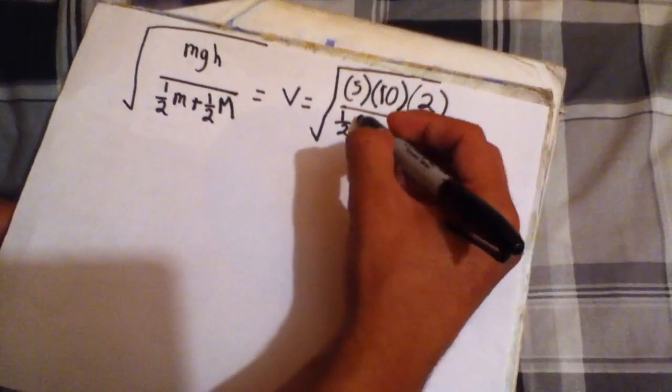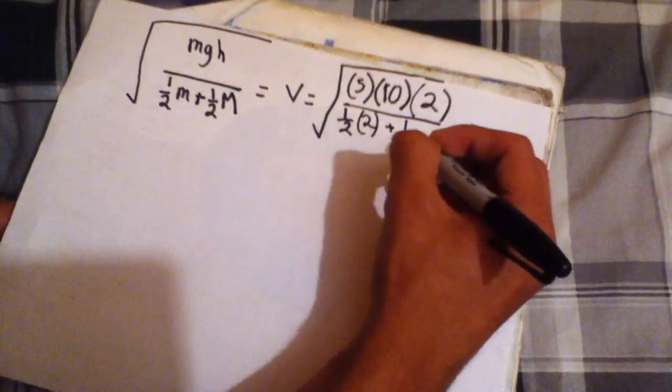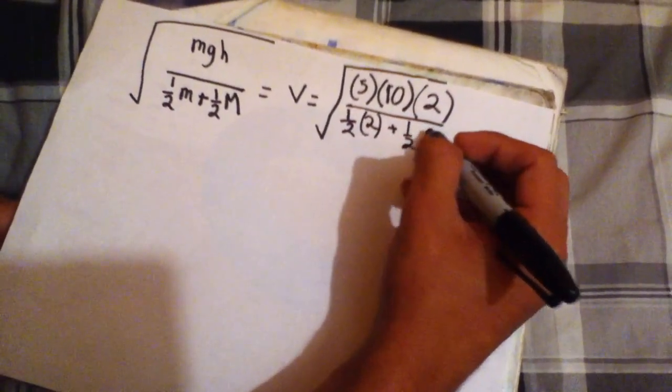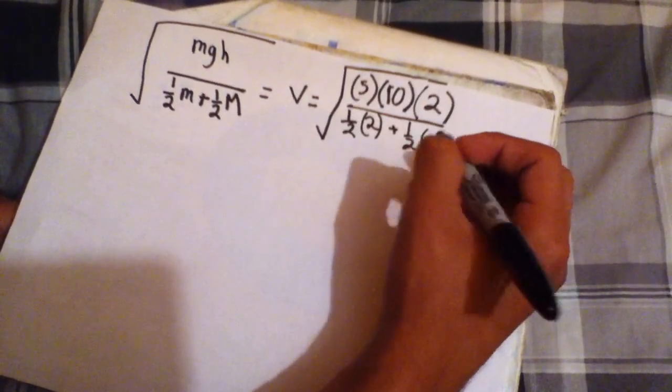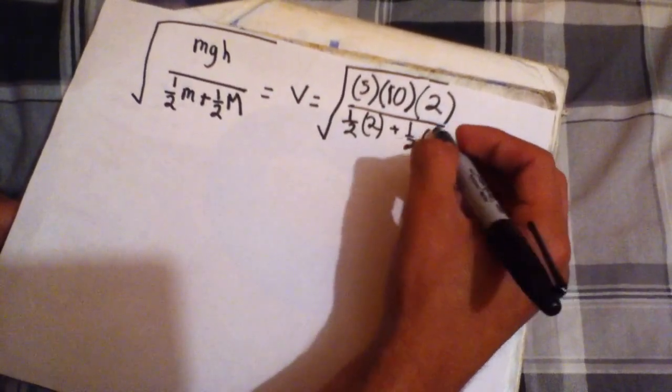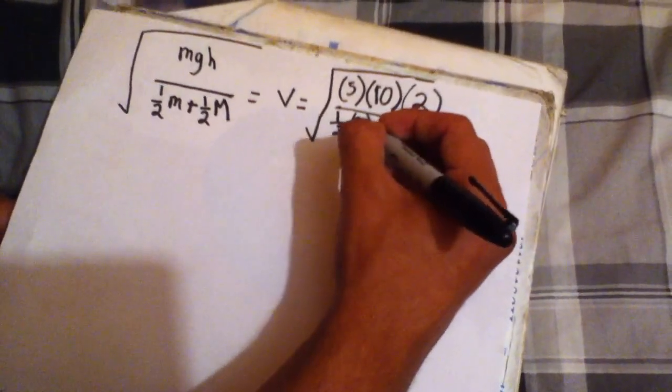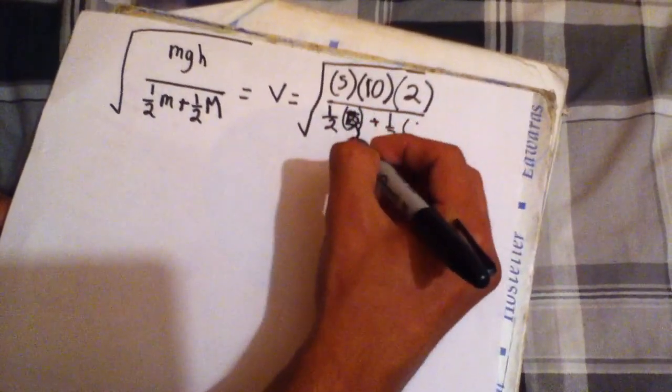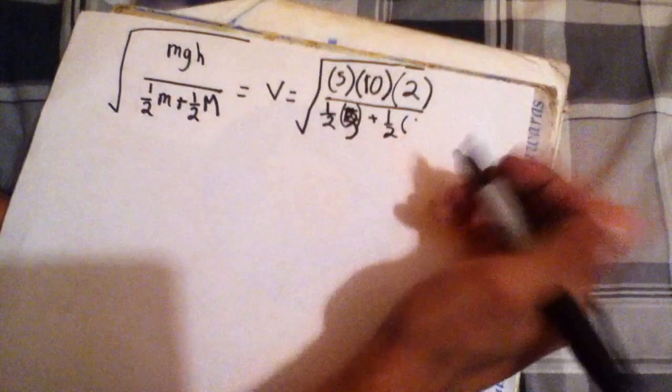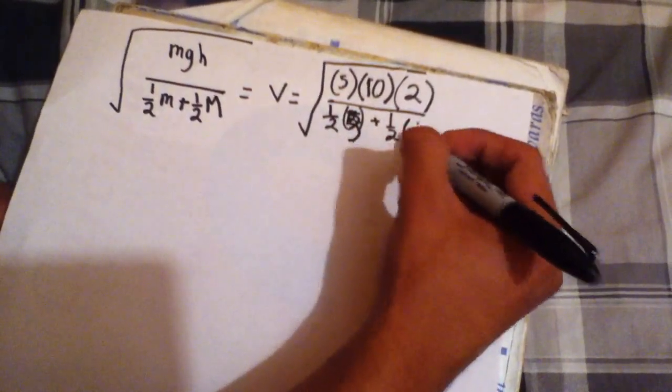And then one half mass of the block plus one half mass of the big ol' pulley, which is 8 kilograms. Yes it is. Oh sorry, and this is 5. I made a mistake, sorry. The mass of the block was 5. I put 2, I don't know why. I'm out of it today.